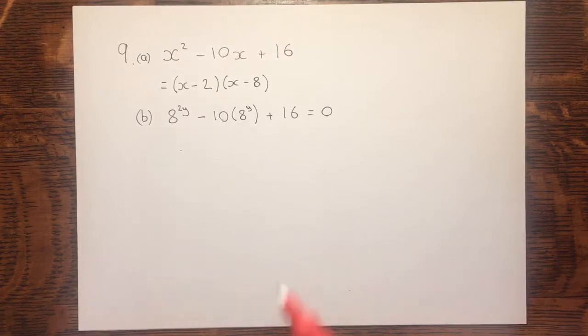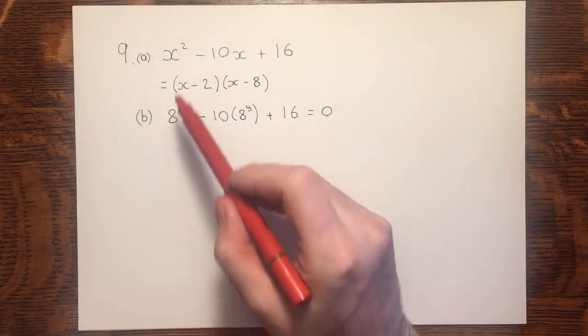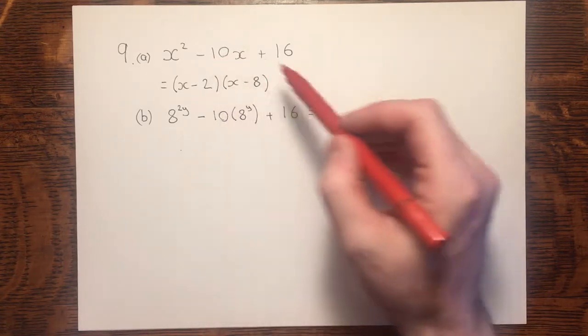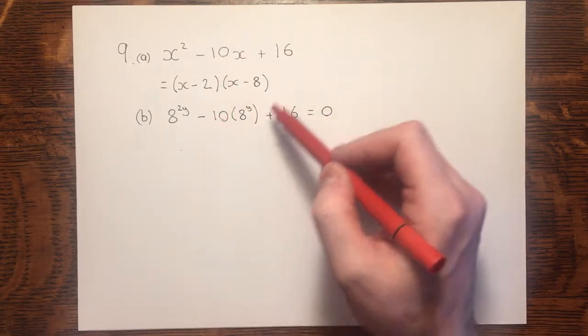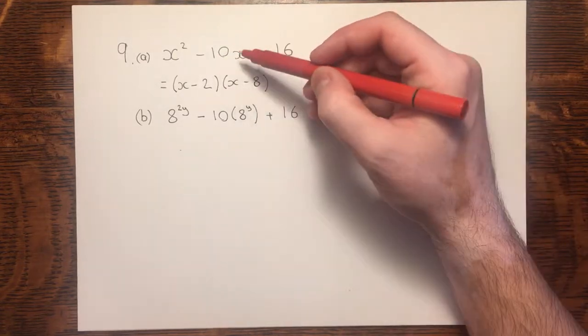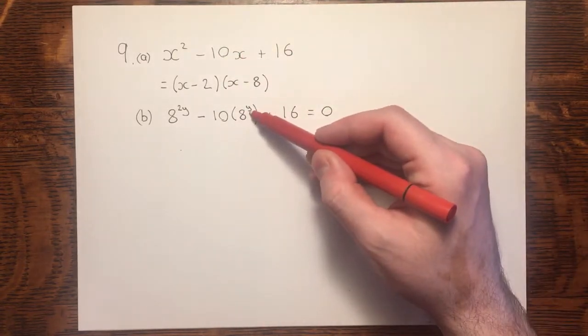Now, you might notice that this is very similar to what we had up above there. We've got this 10, and that 10, and that 16, so rather that minus 10, minus 10, and 16. But what we've got in place of x is 8 to the power y.